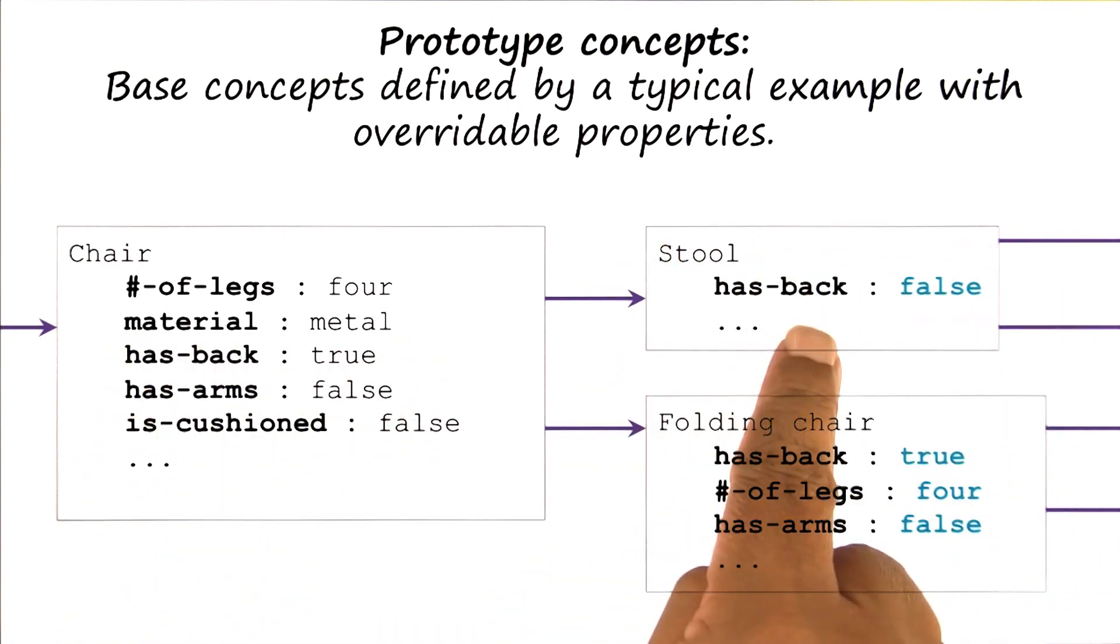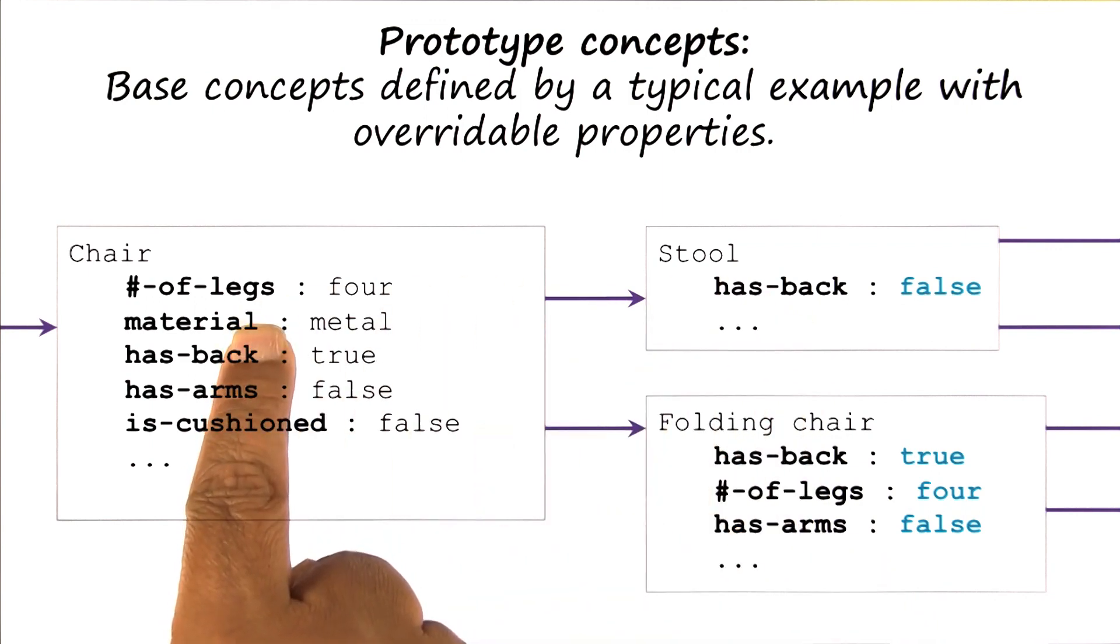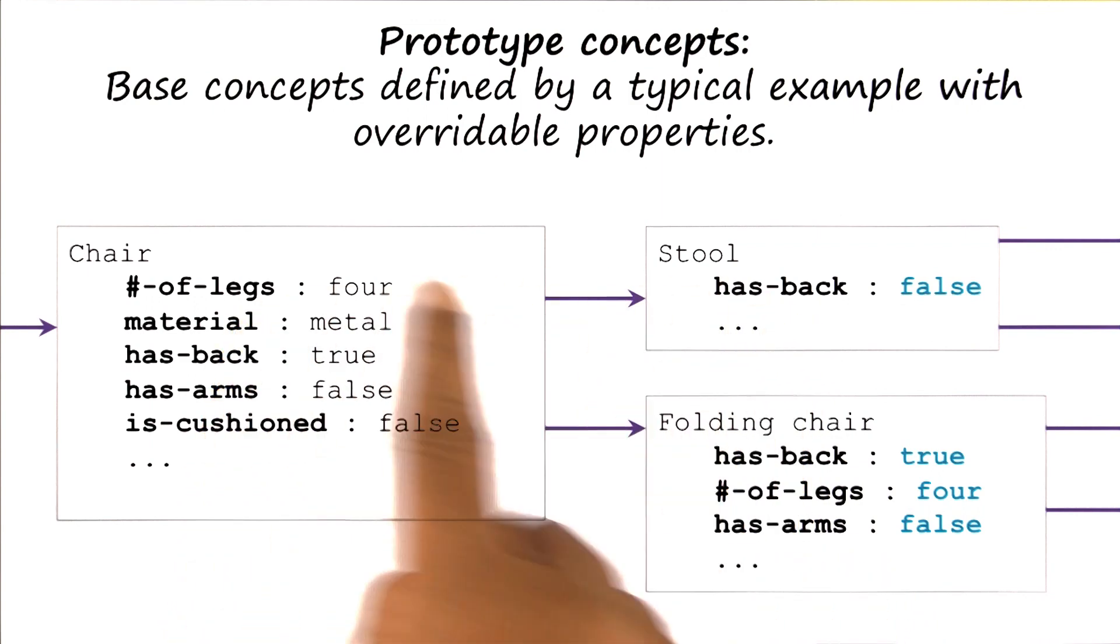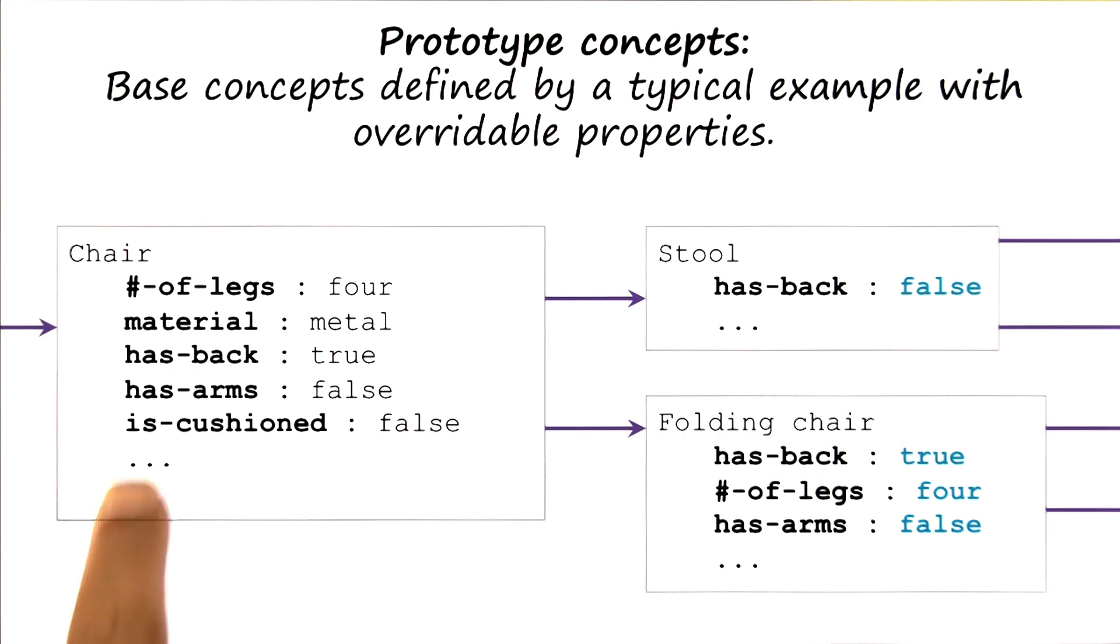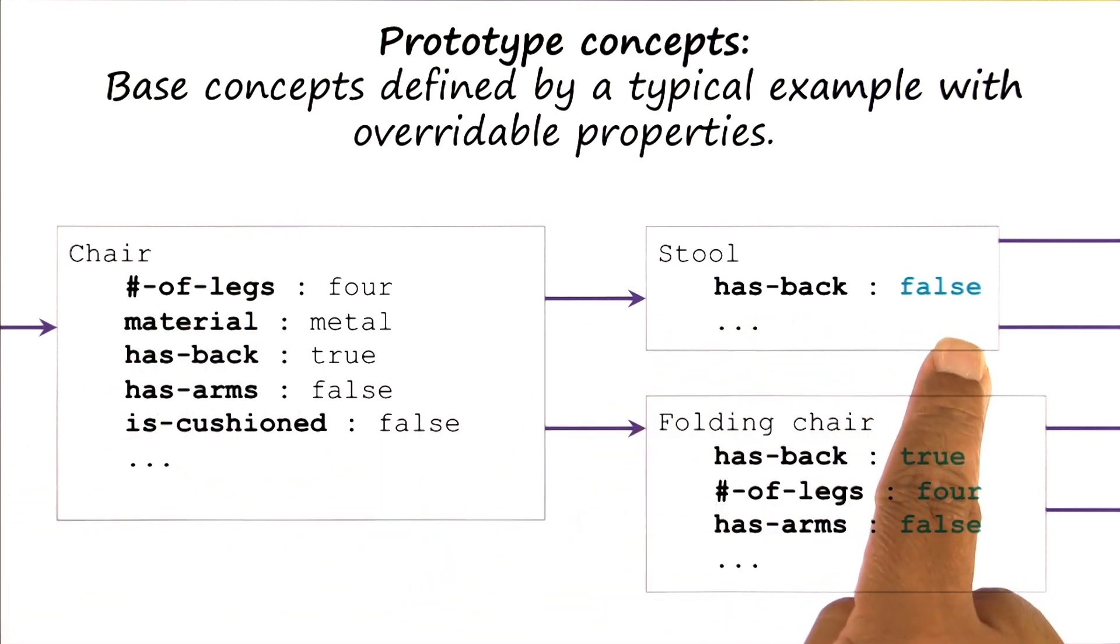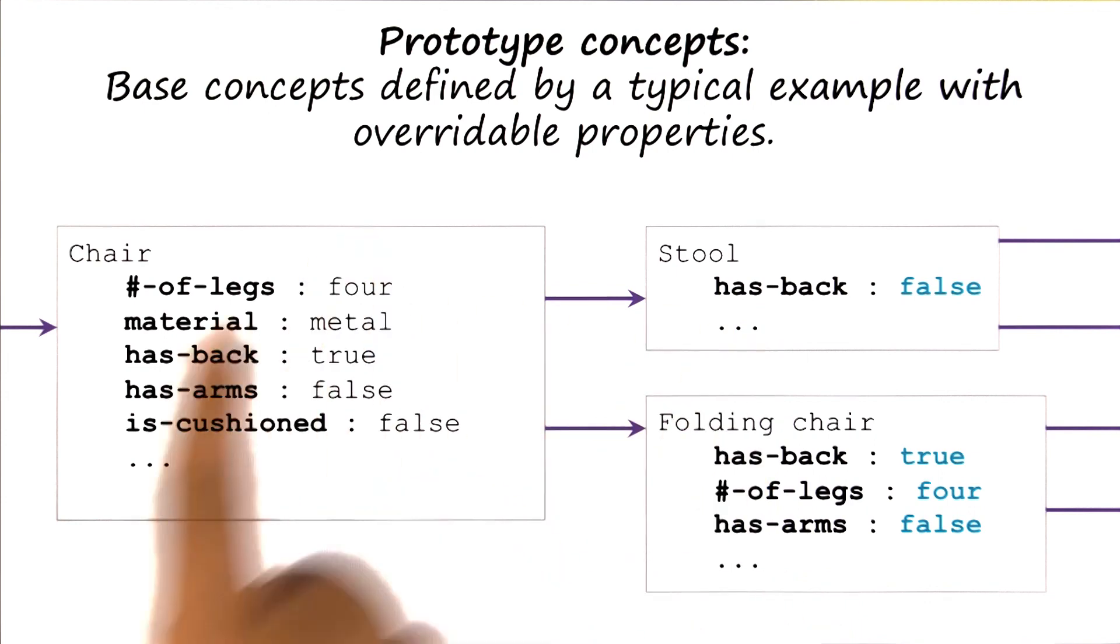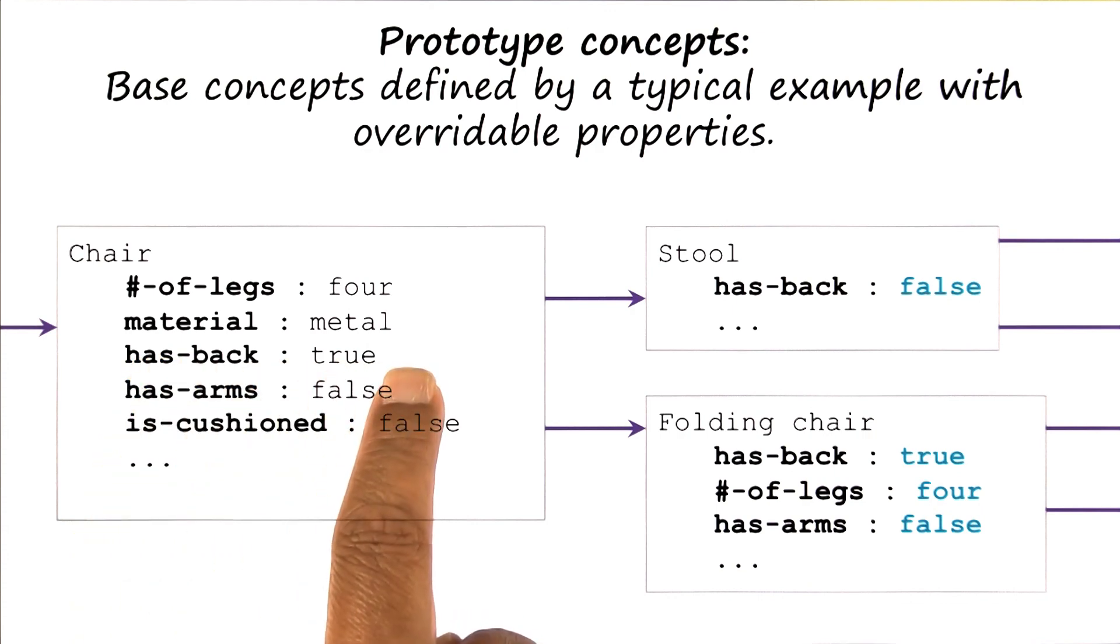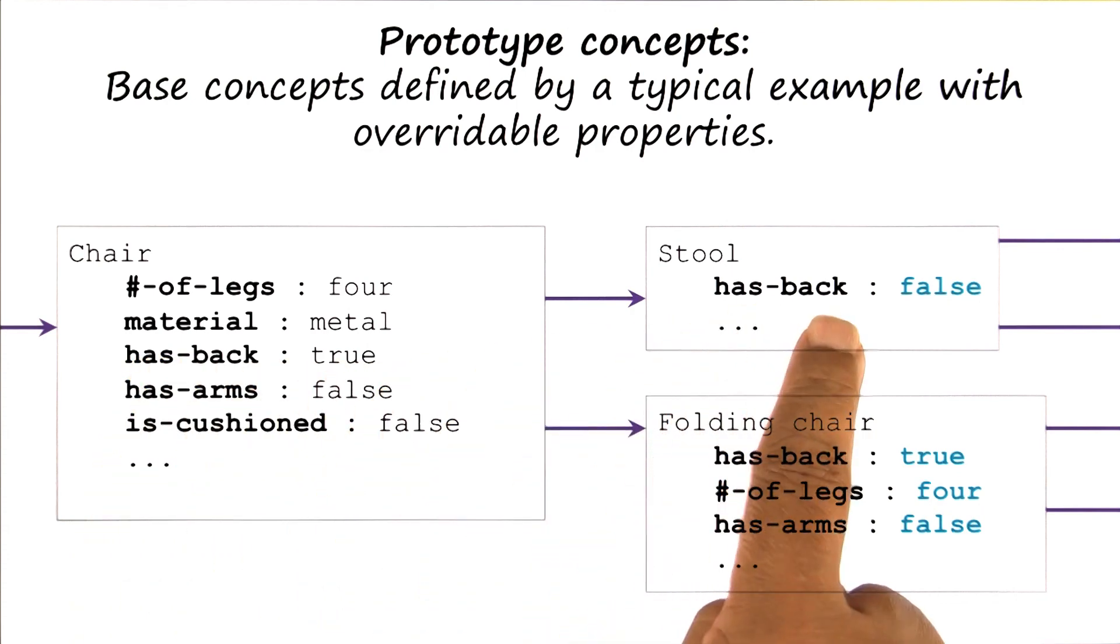Here is a stool, and the stool is a kind of chair, which means that it inherits all the values and all the slots that are there in the chair directly, except for those that happen to be different. So as an example, here it overrides the notion that the chair necessarily has to have a back. In the case of a stool, the stool does not have a back.